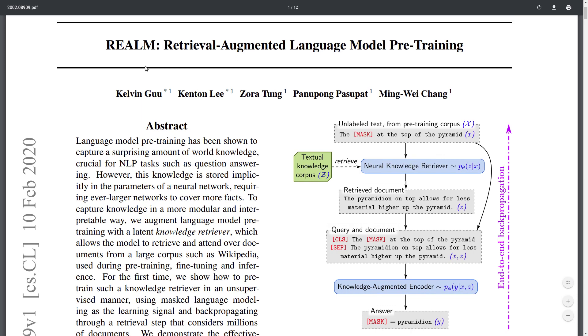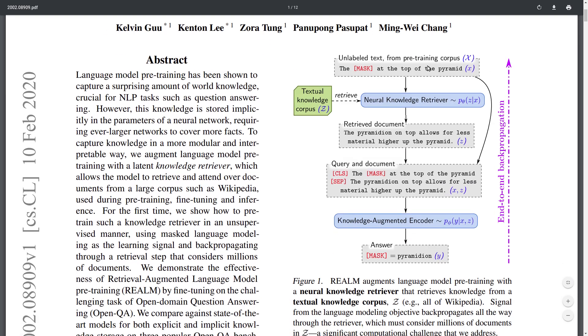The idea of this REALM paper is to augment this process using external knowledge. One could extract a sentence from Wikipedia like 'the pyramidion on top allows for less material higher up the pyramid,' extract this, and integrate it into the language modeling objective. The process becomes: the mask at the top of the pyramid, then a separator token, then this knowledge sentence, and then one can use this sentence and the context to predict the mask token better and improve performance.